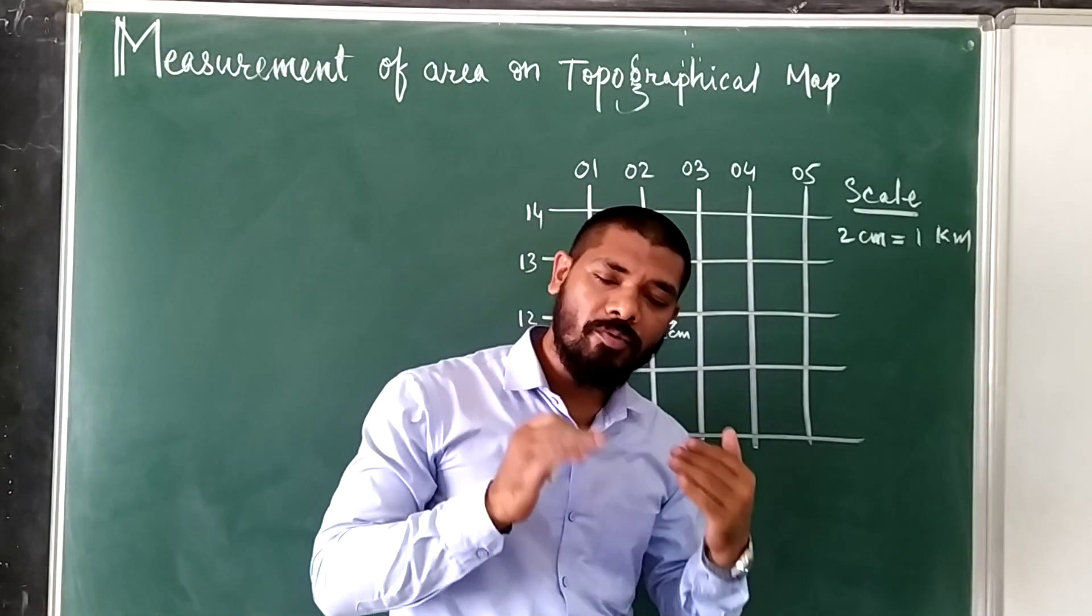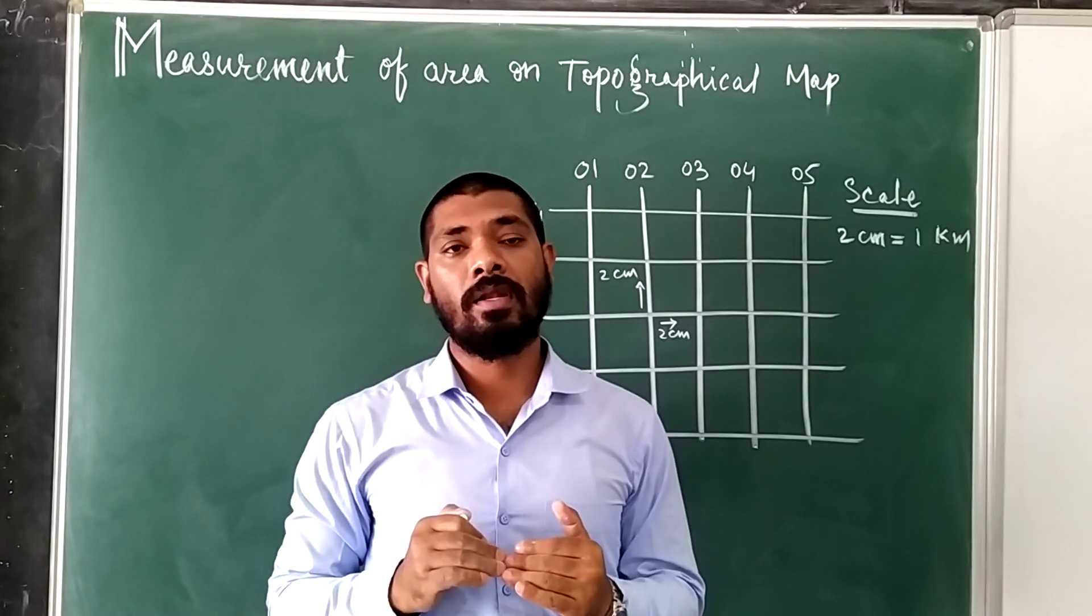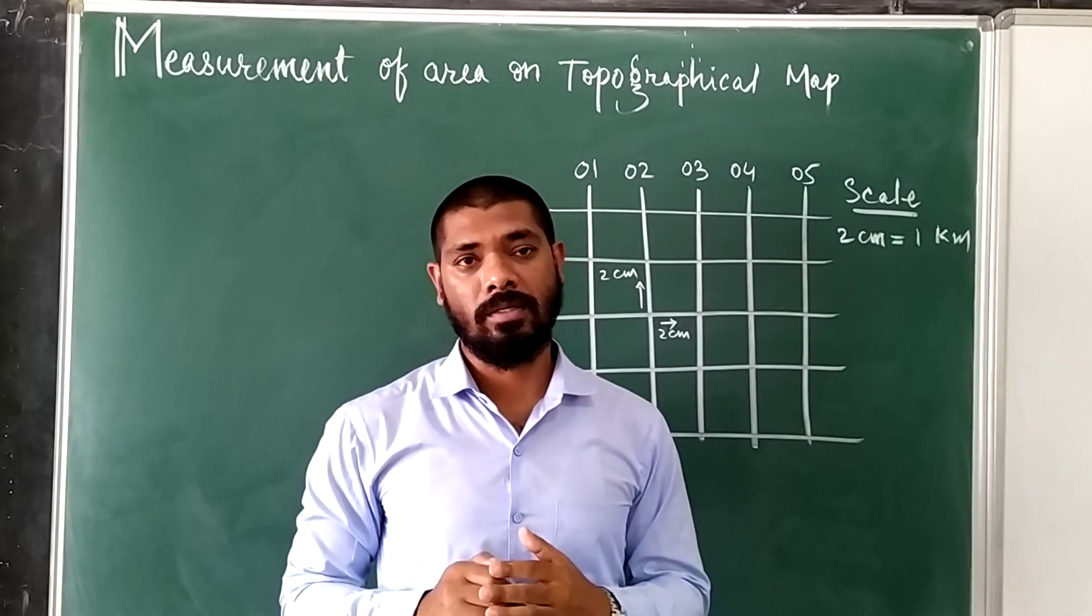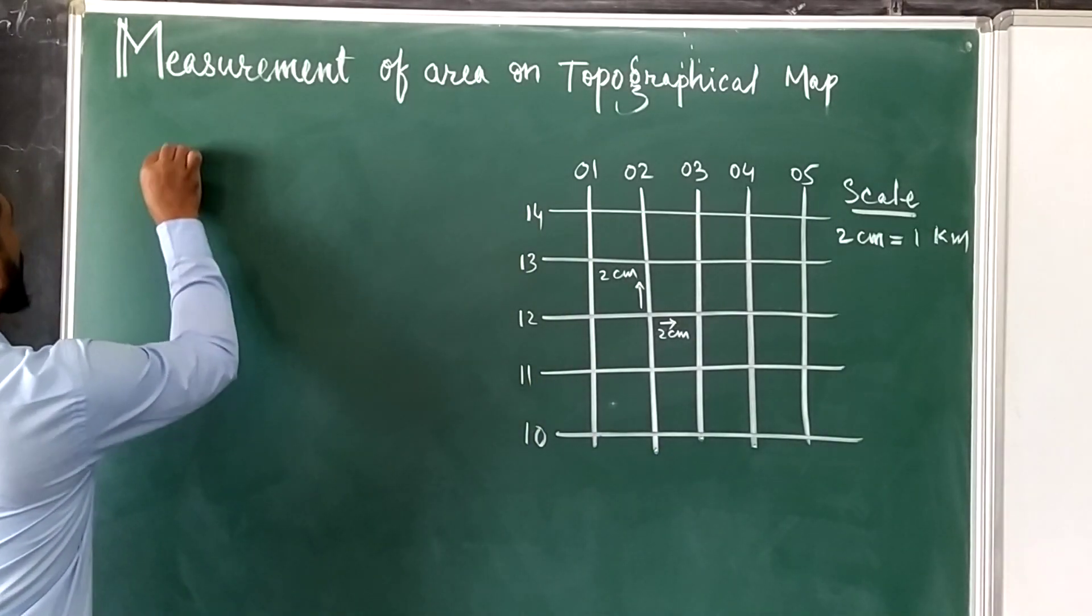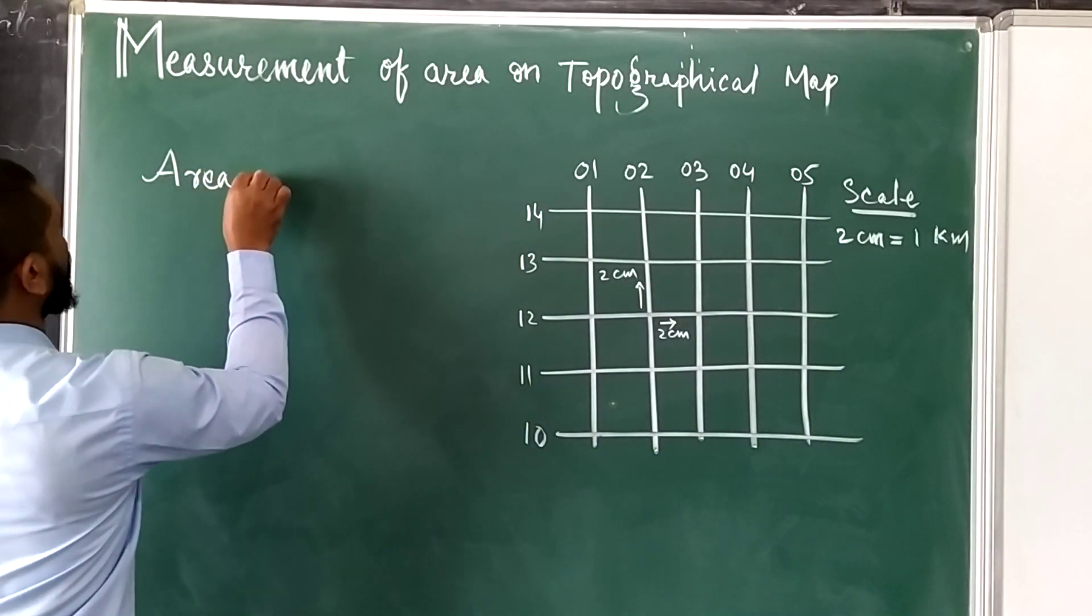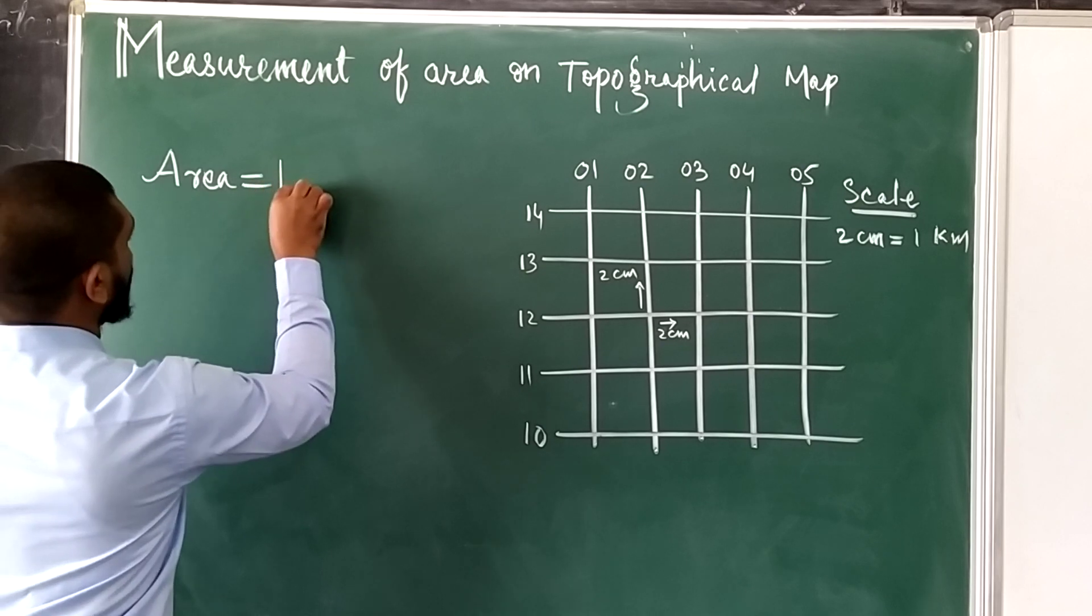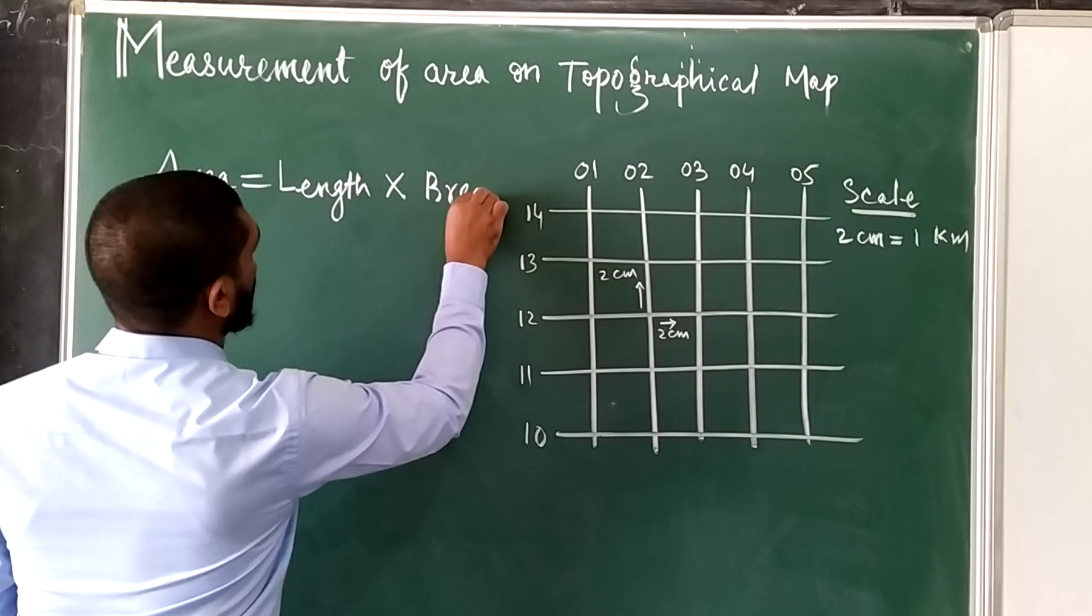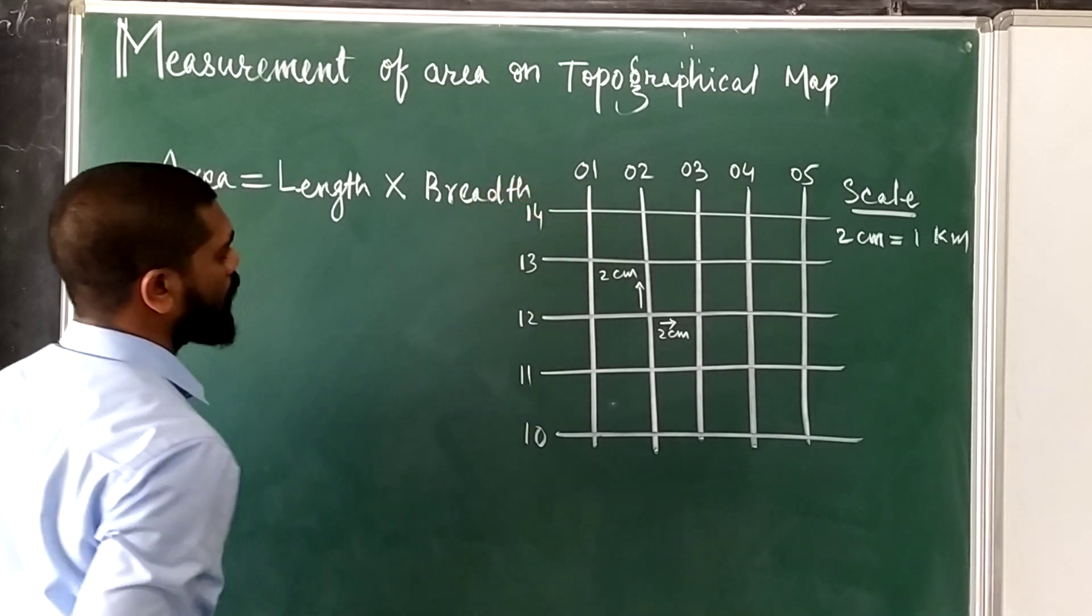So on the topographical map, the area is given by the product of length and breadth. Area is given by the product of length and breadth.